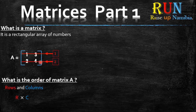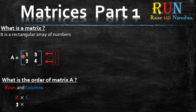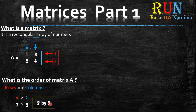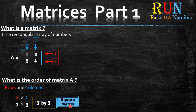Remember the horizontal ones are the rows. So we have two rows multiplied by how many columns does this matrix have? The columns are always the vertical ones. So let's count: one, two. So matrix A has two columns, which means this matrix is what we call a two by two matrix. Now another thing I would like to point out is that whenever you see that a matrix has the same number of rows and columns, that matrix is called a square matrix — whether it's a one by one, two by two, three by three, or four by four.